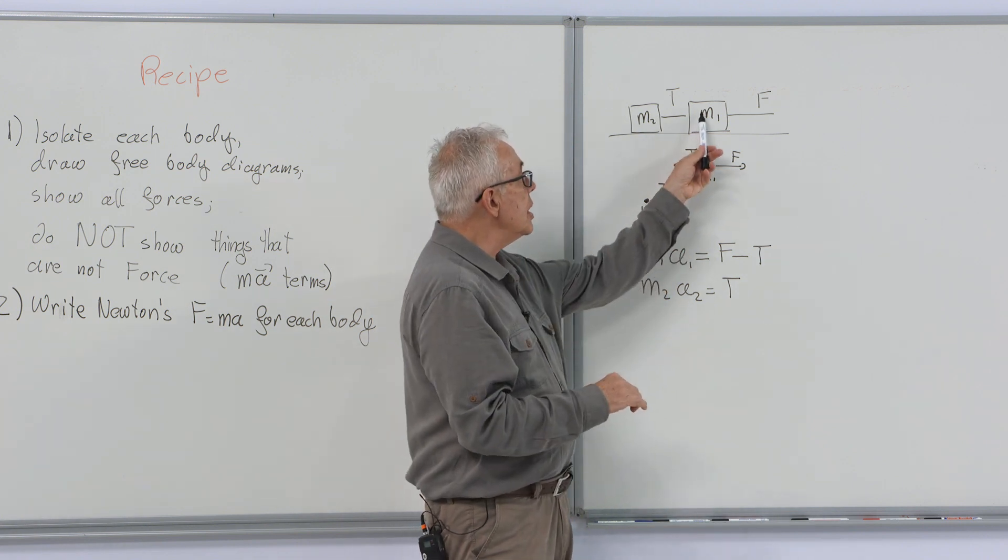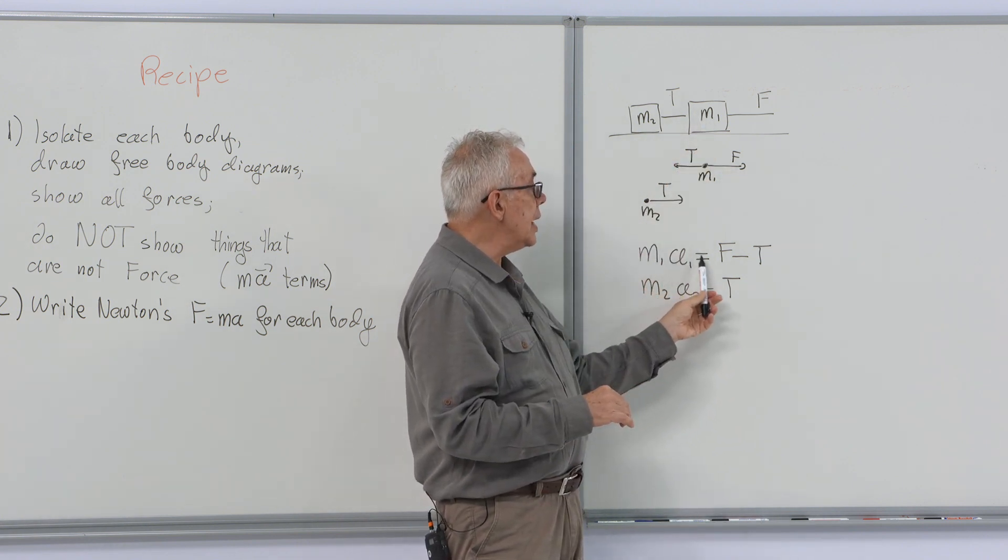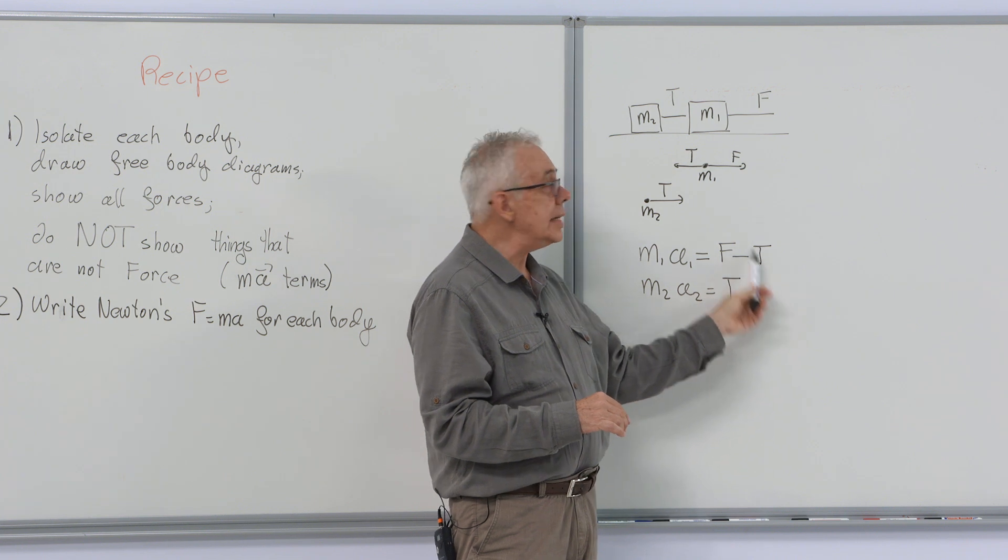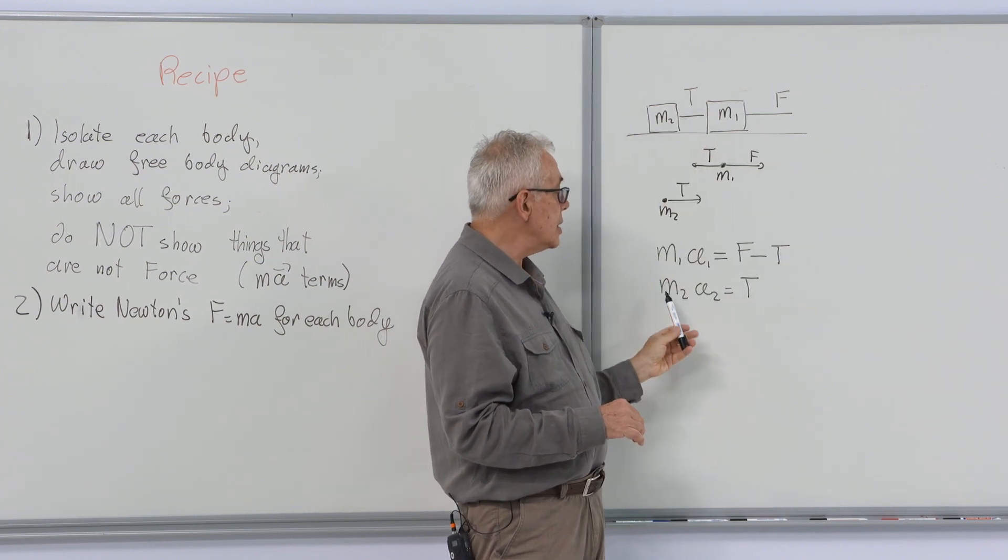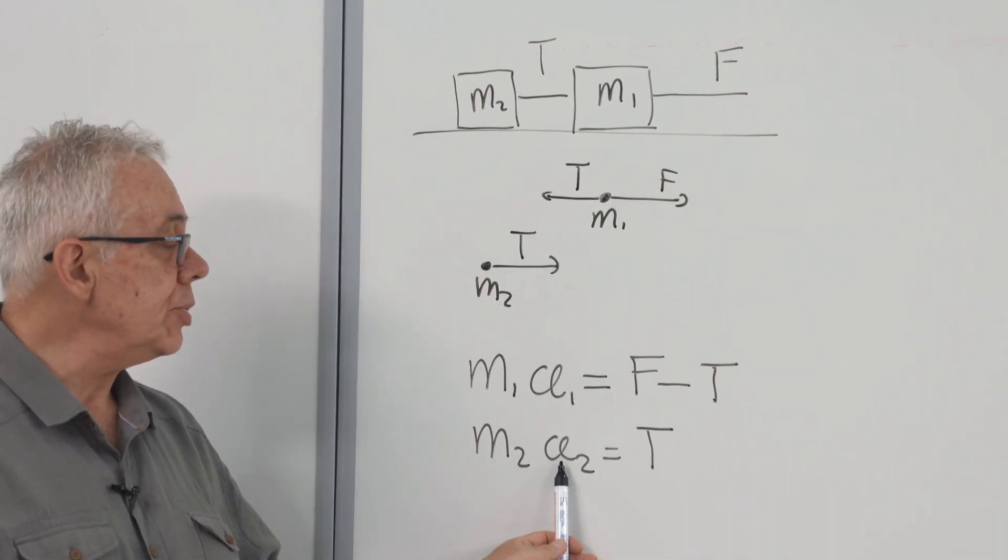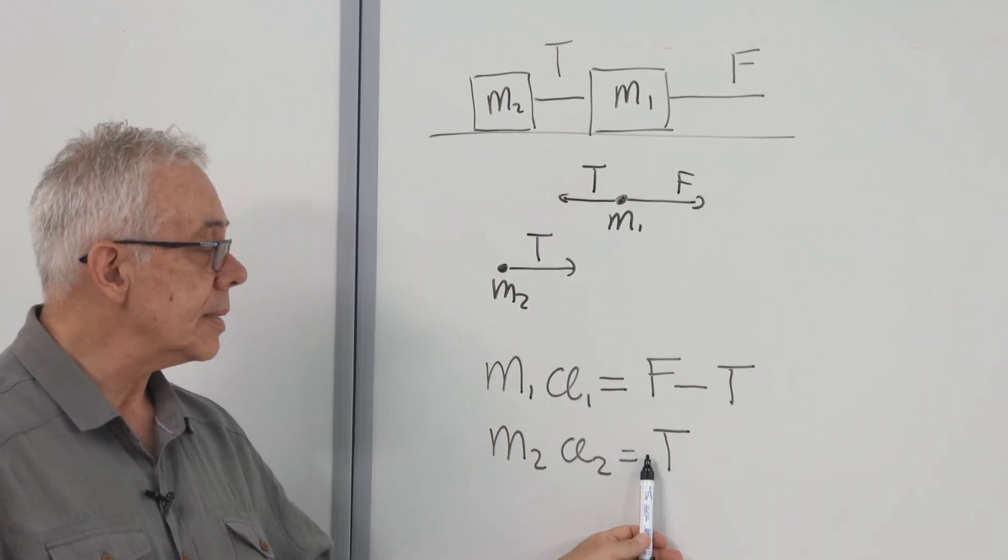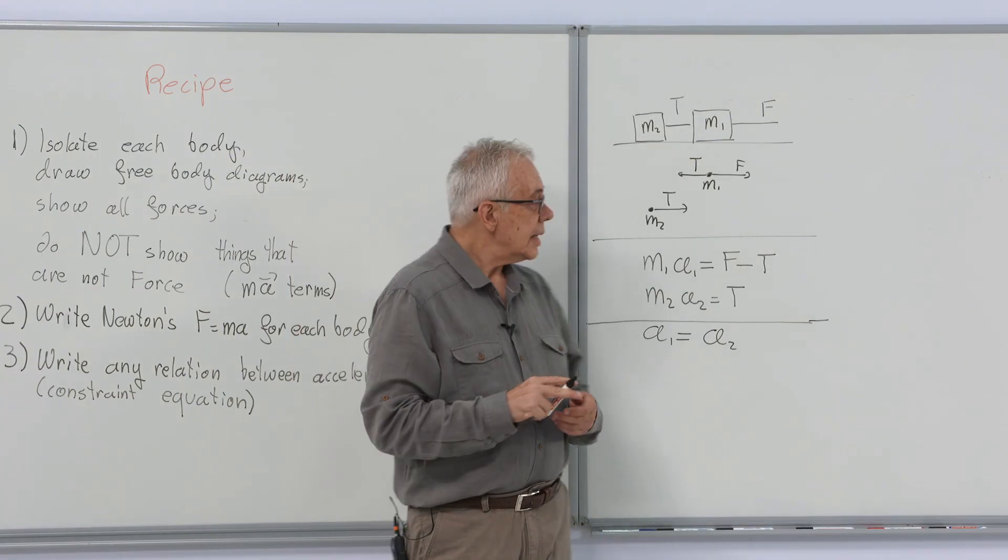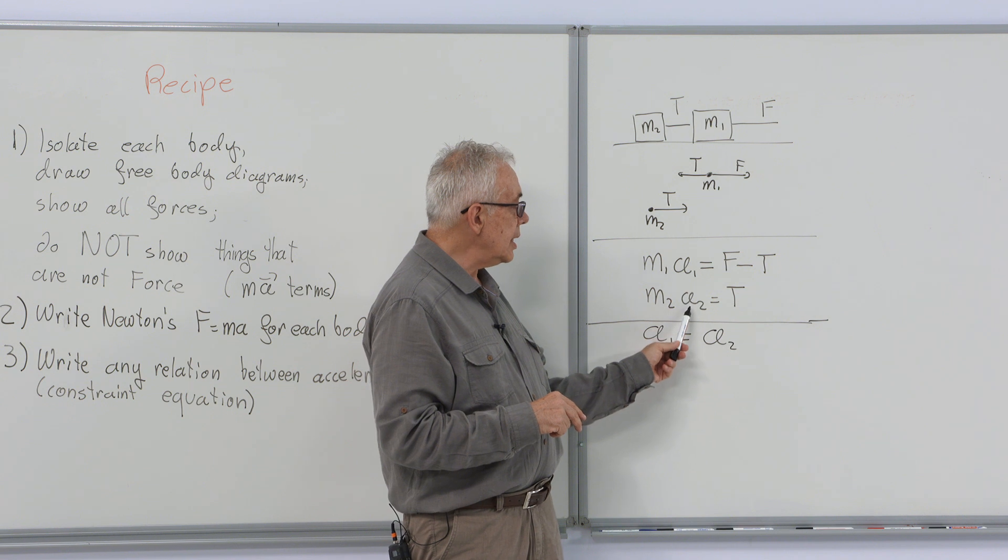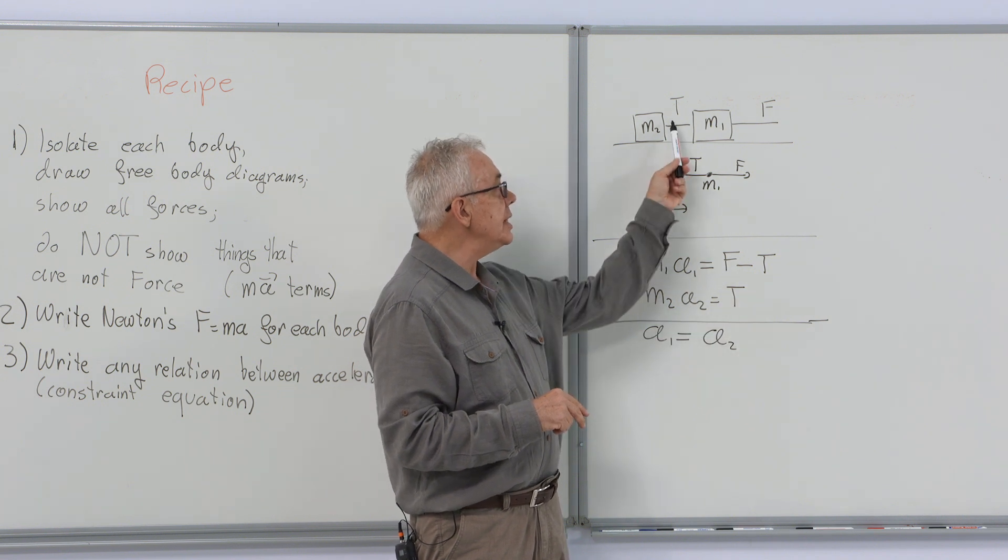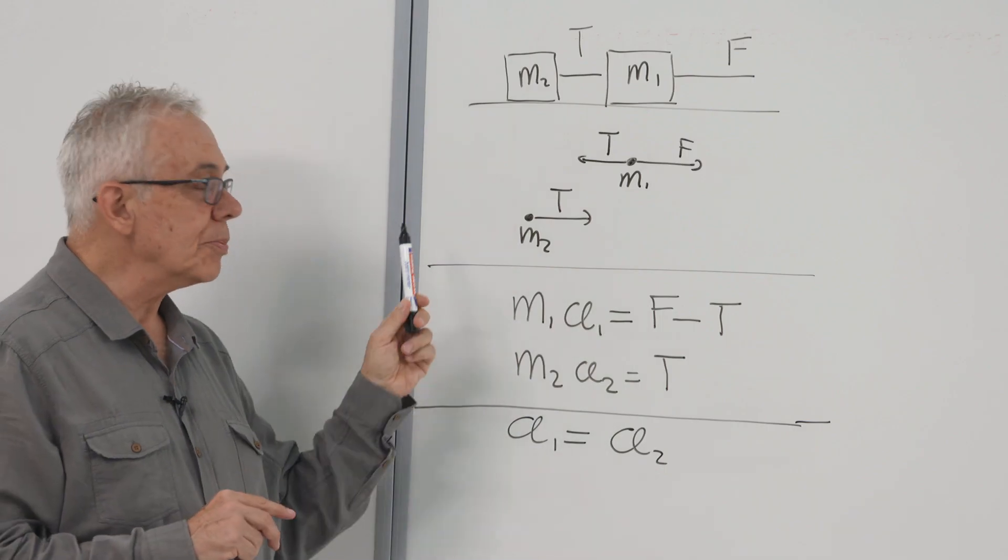Here, for the M1, M1 A1 is equal to F minus T as F is pulling it forward, T backward. And for this, M2 A2 is T. Well, in this case, we have three unknowns: A1, A2, and the tension T. So we need one more equation.